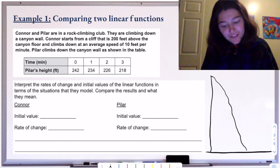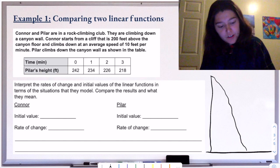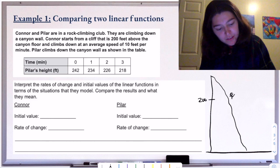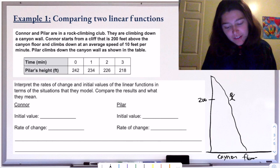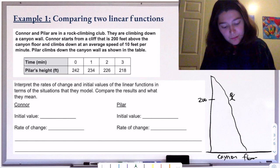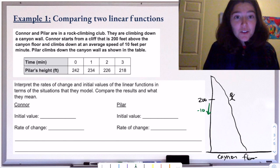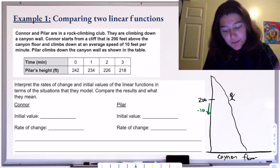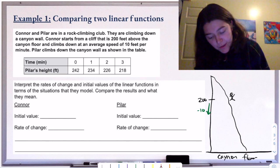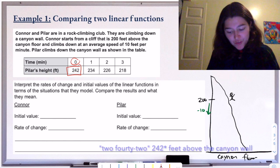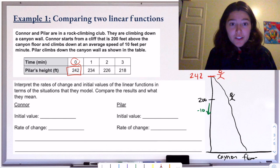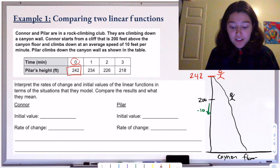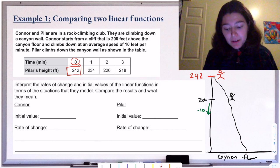Connor starts from a cliff that is 200 feet above the canyon floor and climbs down at an average speed of 10 feet per minute — so every minute, Connor is going down 10 feet. Pilar climbs down the canyon wall as shown in the table. At zero minutes, Pilar is 252 feet above the canyon floor. These are two different functions: Connor's function and Pilar's function, both representing height relative to the ground per minute.